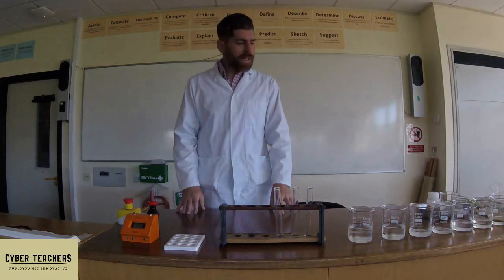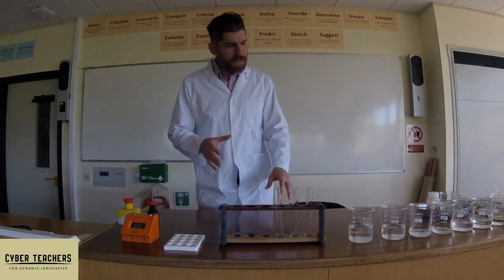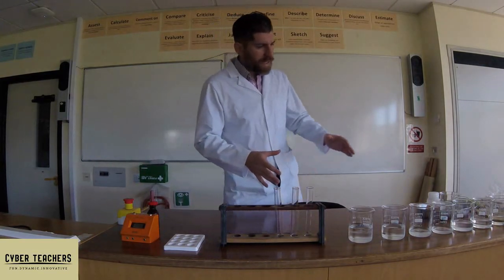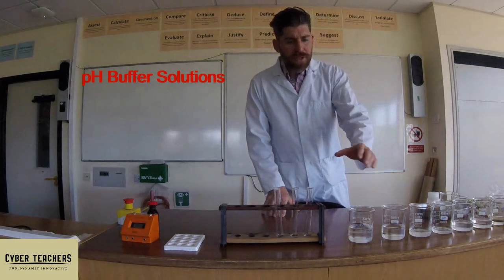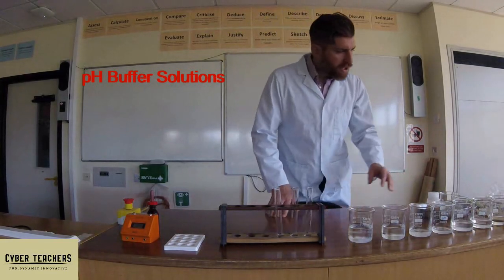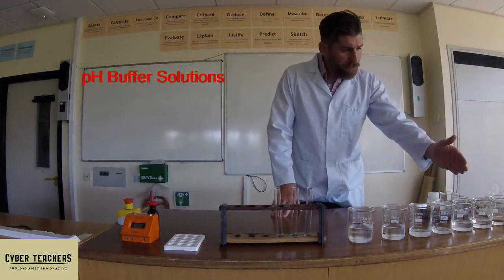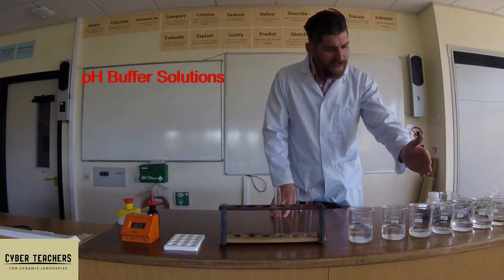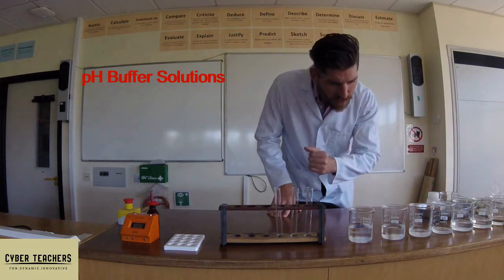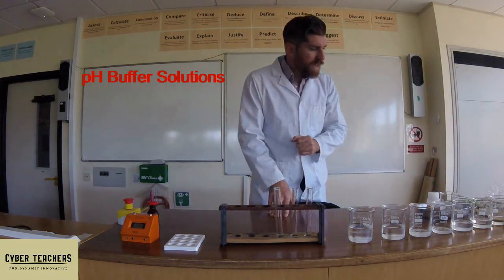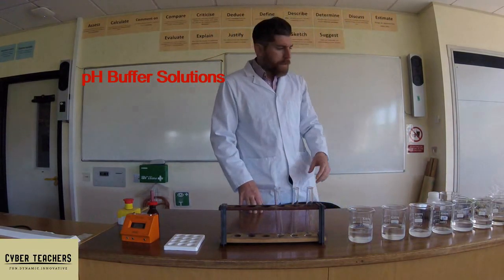To undertake this practical you're going to need a number of things. The equipment includes several ranges of pH — here I've got pH 3, 4, 6, 7, 8, 12, and 13 — so I've got a range of pHs. These are buffers used to set the pH to the right level.